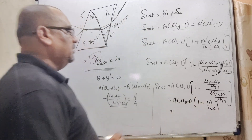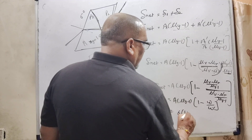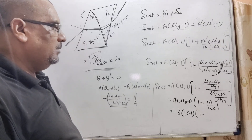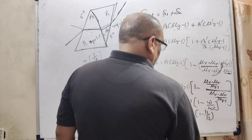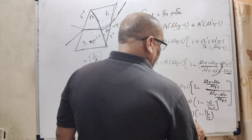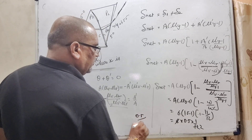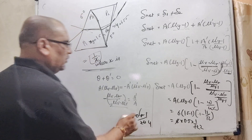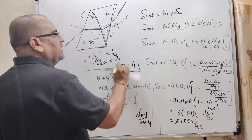Substituting all values: A = 6 degrees, μy − 1 = 0.5, and ω/ω' = 11/12. Net deviation = 6 × 0.5 × (1 − 11/12) = 6 × 0.5 × (1/12) = 3 × (1/12) = 1/4 degrees. Since net deviation = 1/x = 1/4, x = 4 is the correct answer.